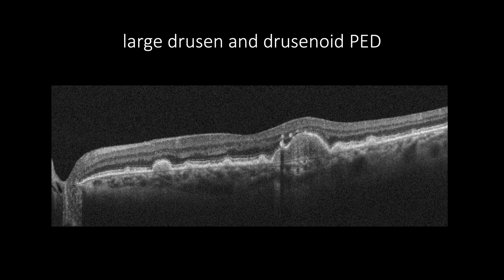Larger drusen are when drusen are more than 125 microns. The presence of one larger drusen is enough to grade the AMD as intermediate. When the larger drusen can reach more than 500 microns due to the accumulation of drusenoid material between the RPE and Bruch's membrane, it forms drusenoid RPE detachment. However, it has the same features as soft drusen, such as disruption of the ellipsoid zone and intraretinal pigmentation that may cast a shadow. Drusenoid RPE detachment may have worse prognosis than soft drusen.